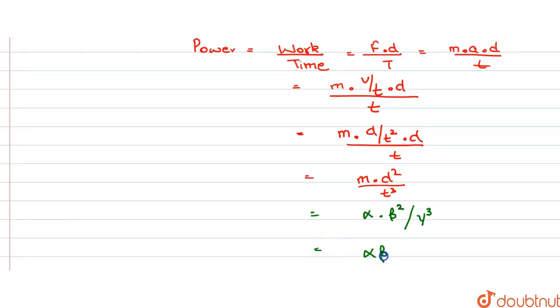Alpha, beta square, gamma is minus 3. So, this is the unit Akash.